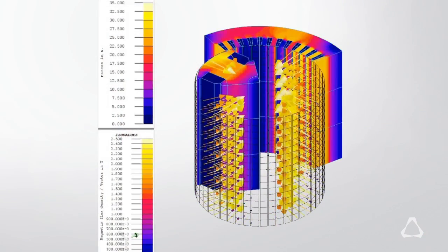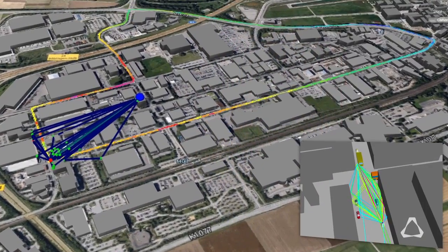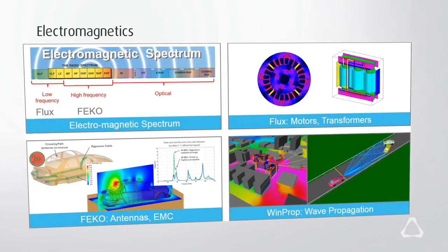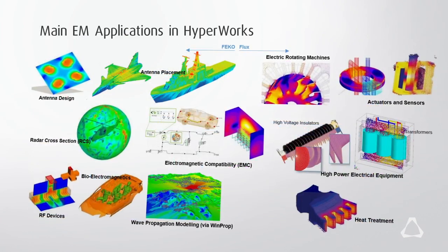And then our electromagnetic suite has actually grown last year through the acquisition of Flux from the Cedrat company, as well as the acquisition of WinProp from AWE. So now we have a complete frequency spectrum from low-frequency electromagnetic to high-frequency electromagnetic, which is covered by FEKO.